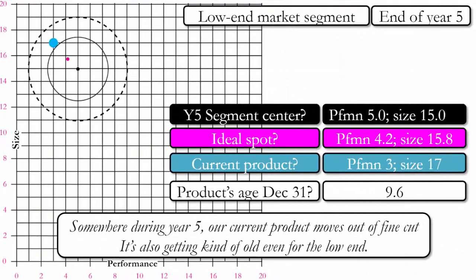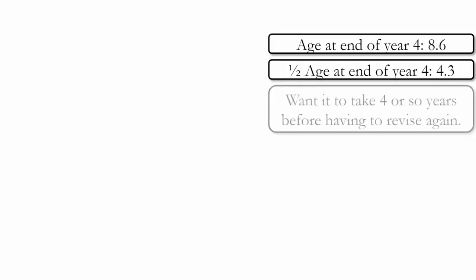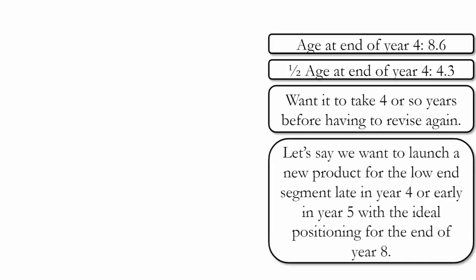At the end of year five, our product is going to move out of the fine cut during year five, which is something we will want to avoid. If we did a revision at the end of year four, our product would have a new age of 4.3. Thinking about where to position our new low-end revision should take into account that the ideal age is seven — meaning you do not want to have to reposition it again before the end of the simulation. We should think ahead and make sure we launch a new product that is still within the fine cut at the end of round eight.